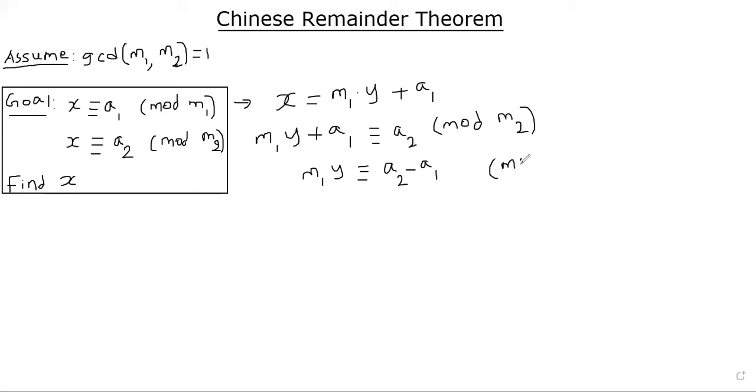Now we can do some easy analysis using the extended Euclidean algorithm. Since M1 and M2 have no factors in common because of the assumption, there must exist a y. We can find that y using extended Euclidean algorithm. So let's call that y to be some number b. We don't know exactly what it is, but it will be some number. The extended Euclidean algorithm will find for us.